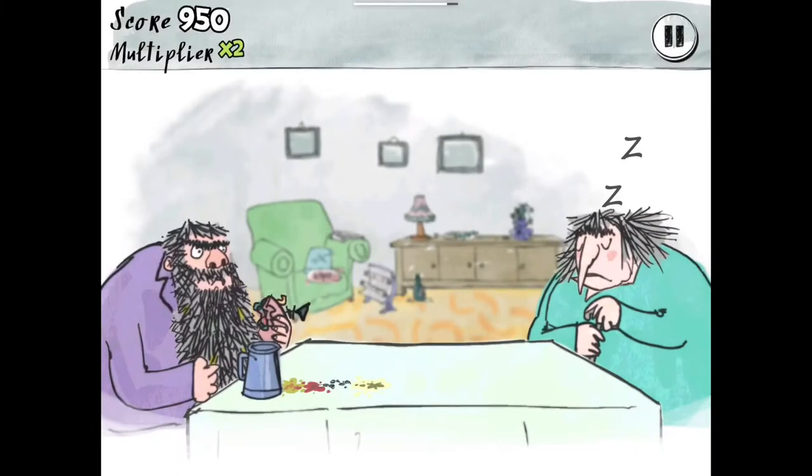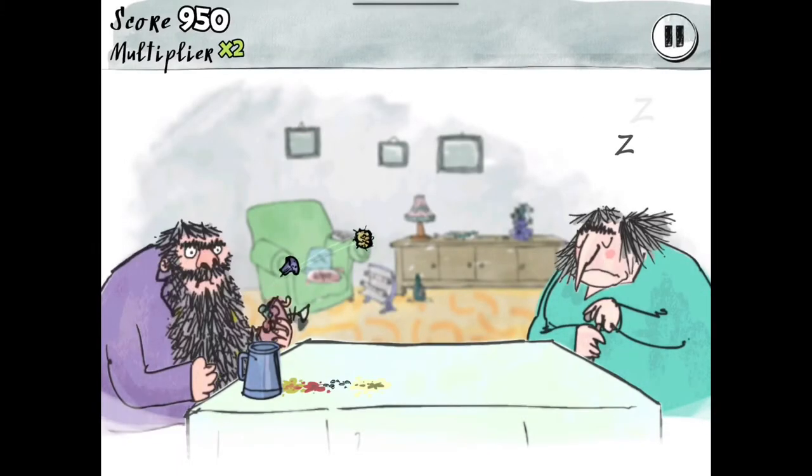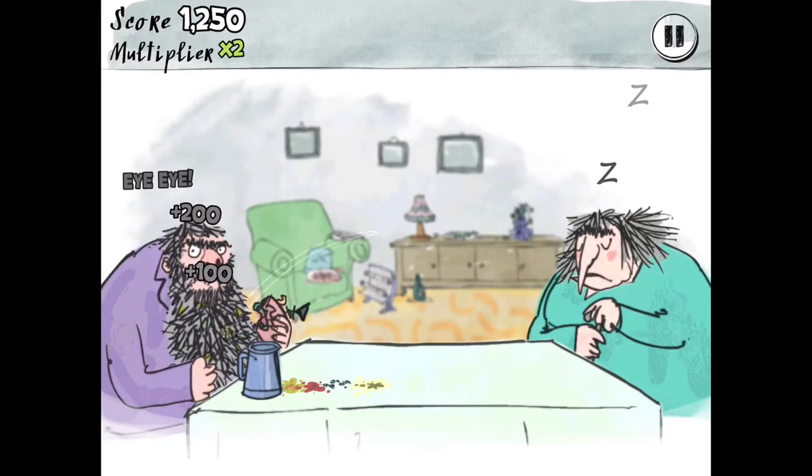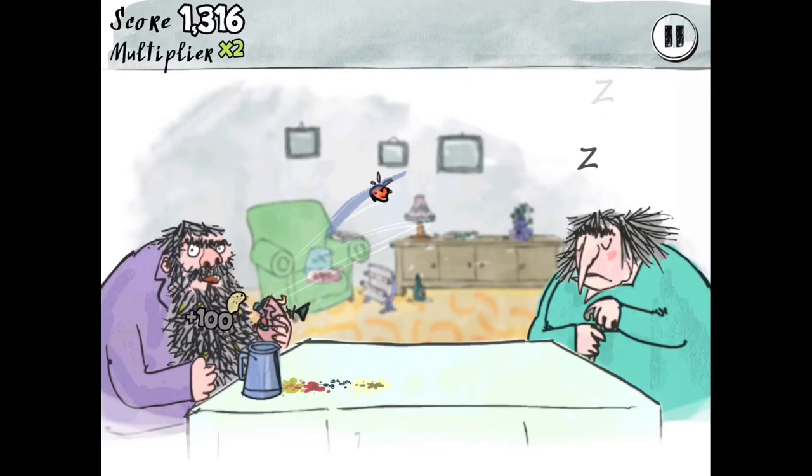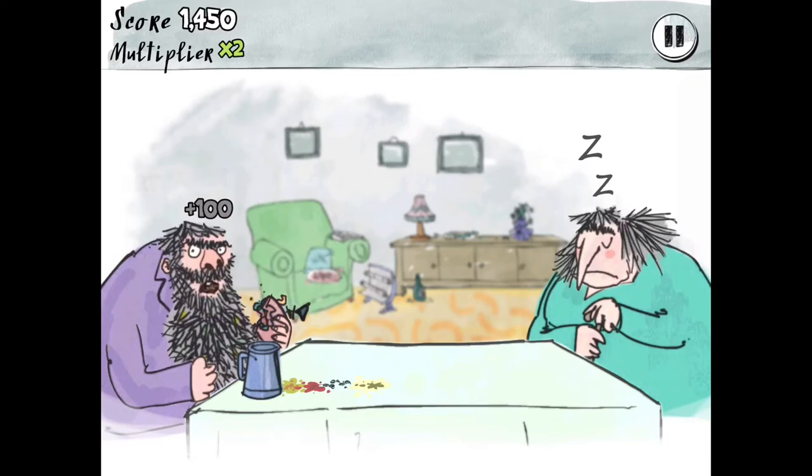Good, round two. So the point of the game is you throw the food only to Mr. Twit, not Mrs. Twit. Okay, so you're gonna protect her if she's sleeping nicely.